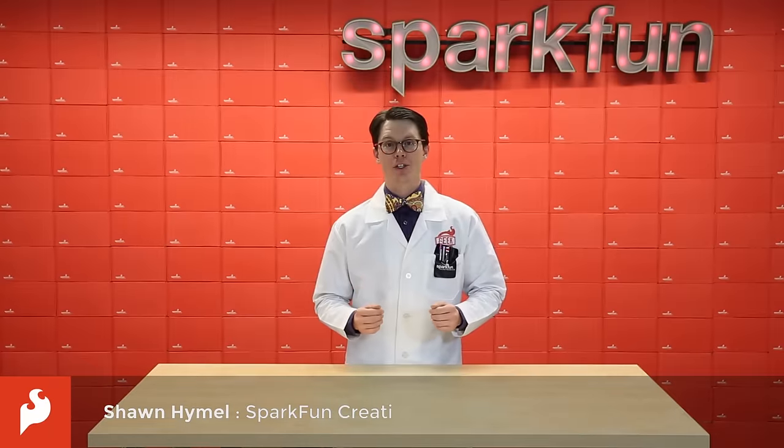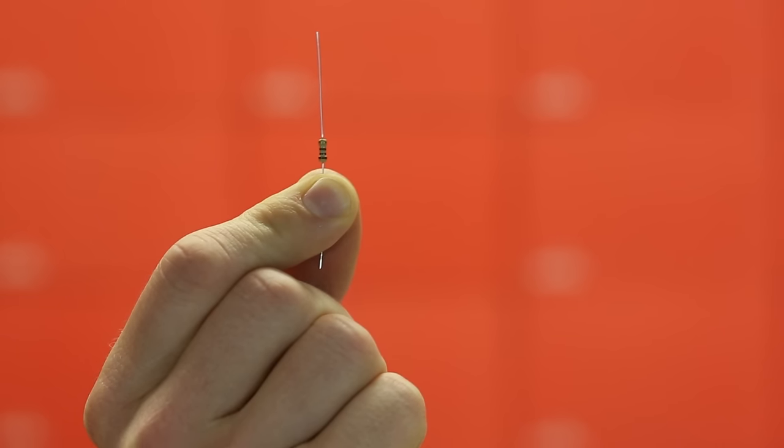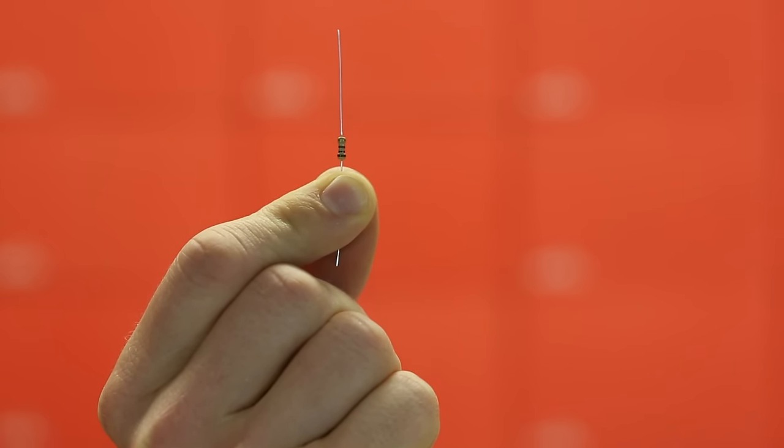One of the most useful ways to analyze a circuit is to look at the relationship between voltage and current. And there is one component that makes that analysis very simple. This is the resistor. Its function is very simple. It restricts the flow of electrons.